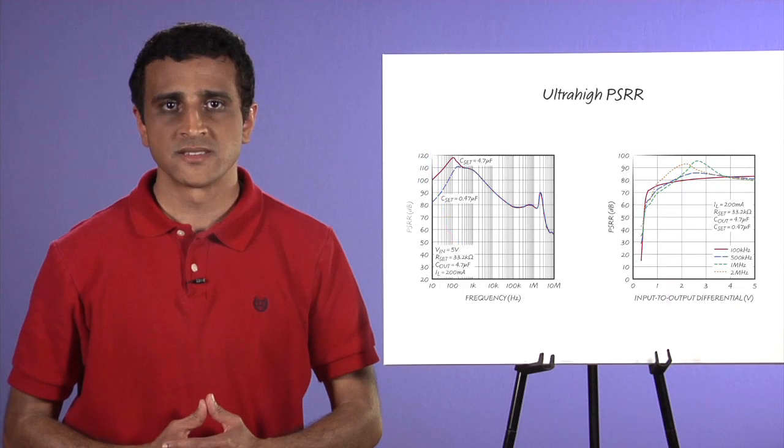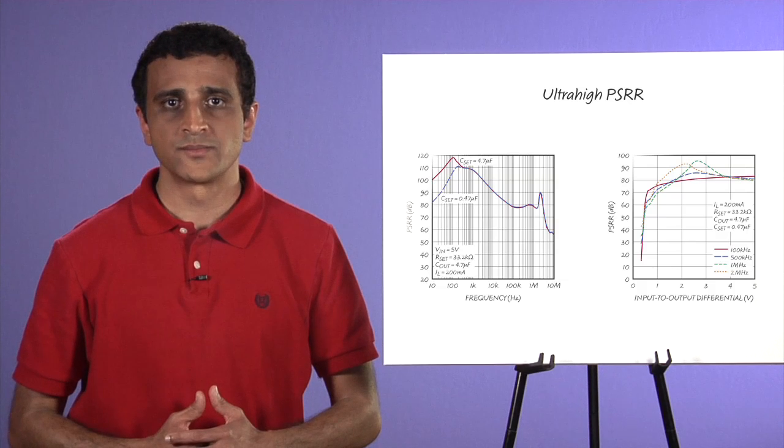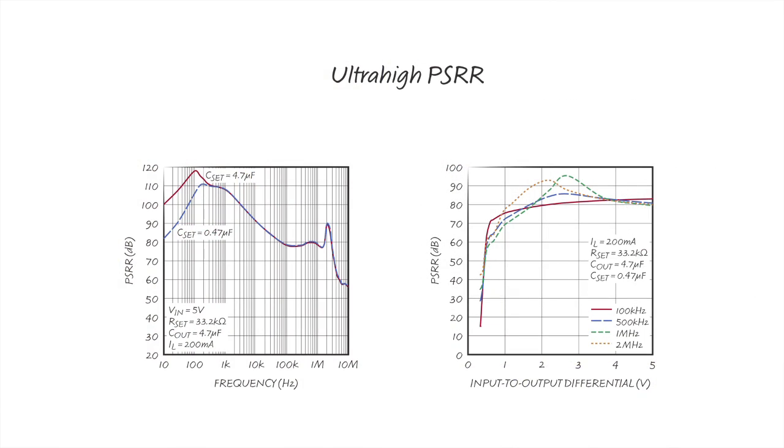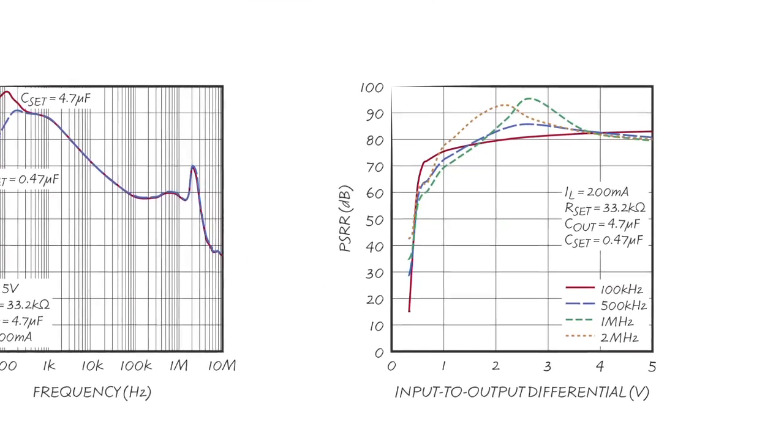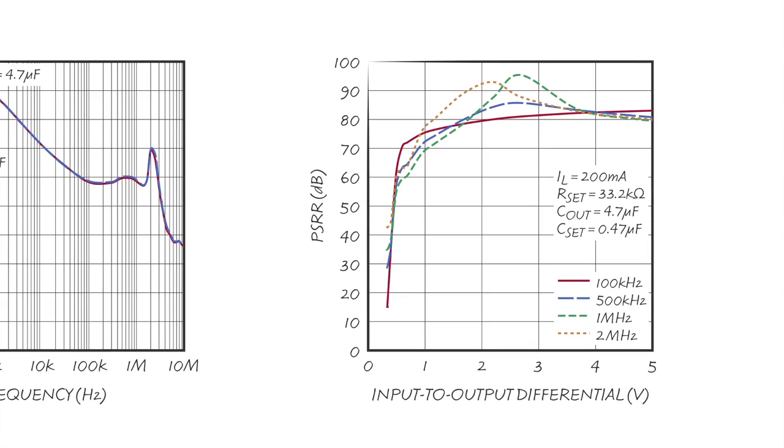As with noise, increased set-pin capacitance improves lower-frequency PSR. Unlike traditional LDOs whose PSR deteriorates into the tens of dB as you approach dropout, the LT3042 maintains high PSR at even low input-to-output differentials.